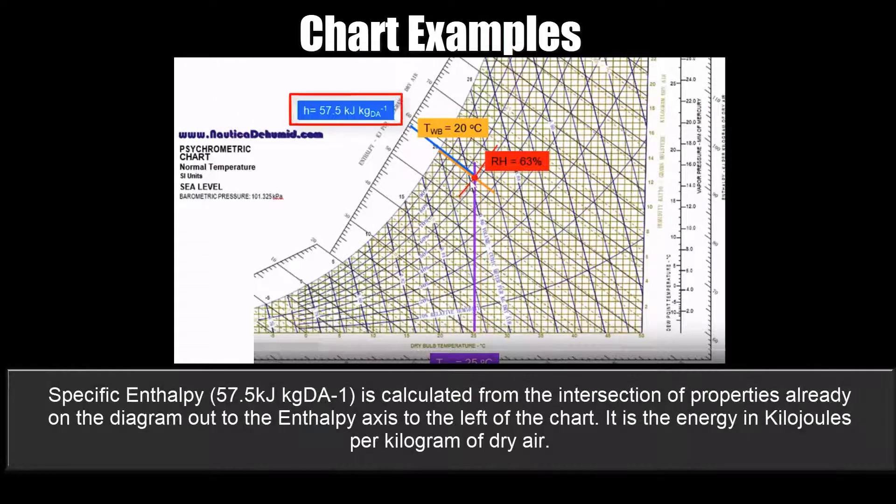Specific enthalpy is calculated from the intersection of properties already on the diagram out to the enthalpy axis to the left of the chart. It is the energy in kilojoules per kilogram of dry air.